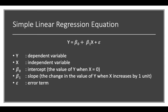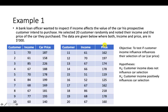This is the simple linear regression equation — it is very important for you to understand it. Y is your dependent variable and X is your independent variable. Since simple linear regression has only one independent variable, we only have one X. B0 (beta zero) is the intercept — the value of Y when X equals zero. B1 is the slope — the change in the value of Y when X increases by one unit. E is your error term.